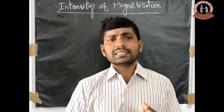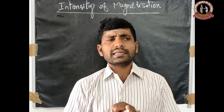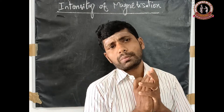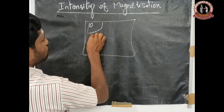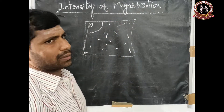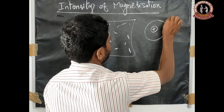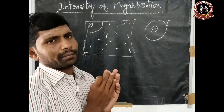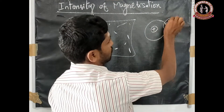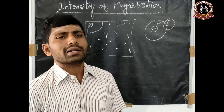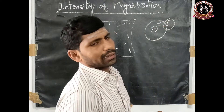Next, we discuss intensity of magnetization. A material contains a large number of small atoms. Each atom contains a nucleus and outer orbital electrons. The electron revolves around the nucleus in orbital motion.